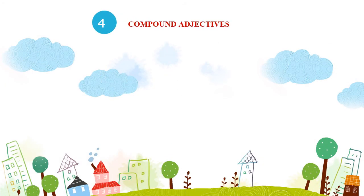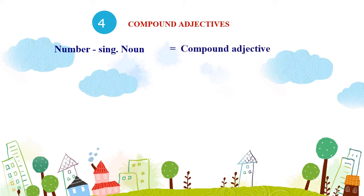Chúng ta tiếp tục với mẫu câu thứ 4: Tính từ ghép – Compound Adjective. Tính từ ghép được thành lập bằng cách kết hợp một con số và một danh từ đếm được. Danh từ của tính từ ghép này luôn ở hình thức số ít, ngay khi chúng bổ nghĩa cho danh từ số nhiều, và được kết nối với một con số bằng một dấu gạch ngang.